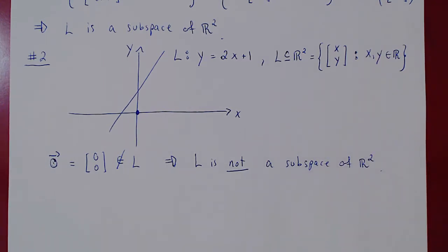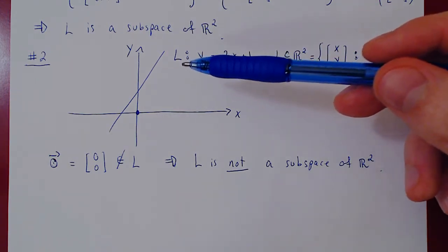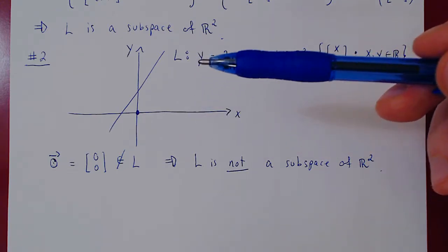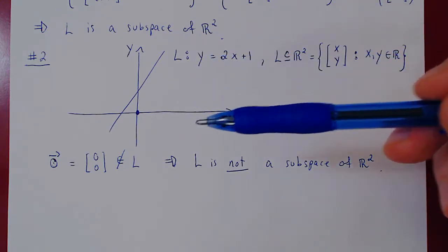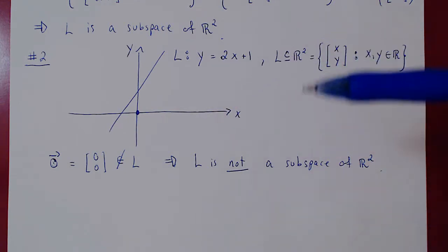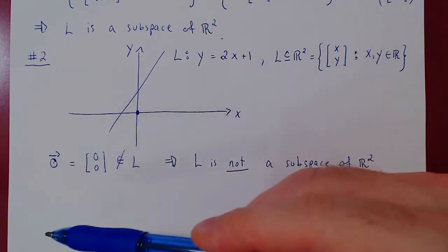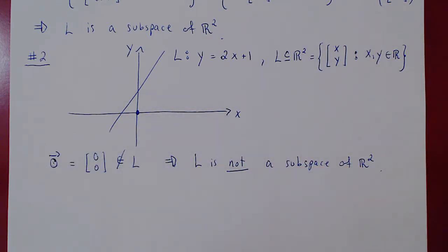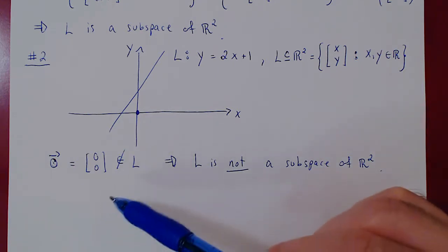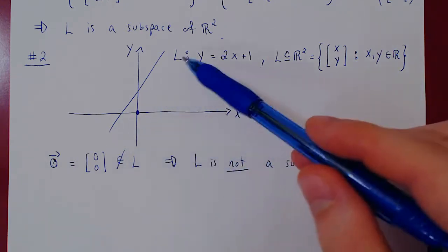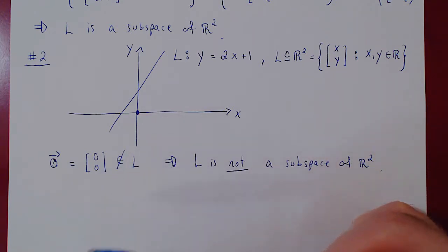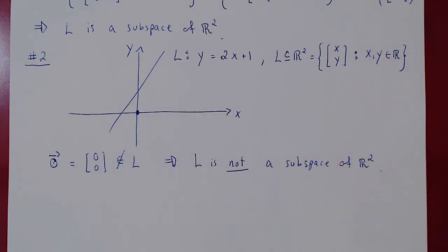Always keep this in mind: if L were a vector space, it would be closed under scalar multiplication. You could multiply any vector by 0, and it would have to still be a vector in your space. But any vector times 0 is the zero vector. So if the zero vector is not an element of the space, the space is not closed under scalar multiplication and therefore cannot be a subspace of R2.